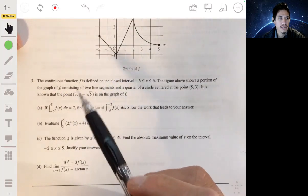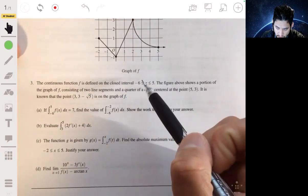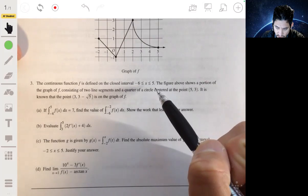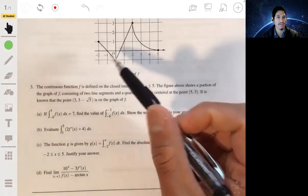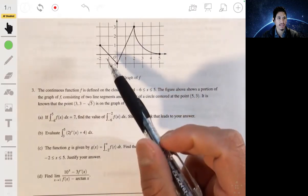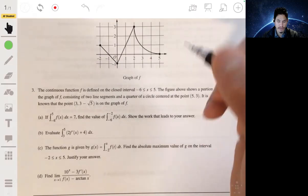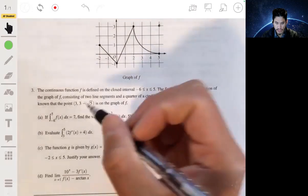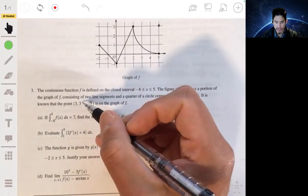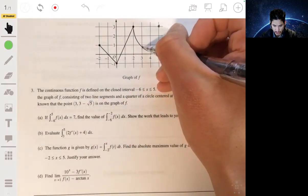Alright, problem three. We got a continuous function f defined on the closed interval from negative 6 to 5, and this figure only shows part of it, part of the graph from negative 2 to 5. You can see it consists of two line segments and a quarter circle. The circle is centered at the point (5, 3), and we have the point (3, 3 - √5) on the graph of f, so that would be this point here.